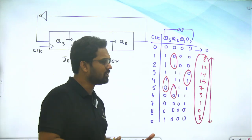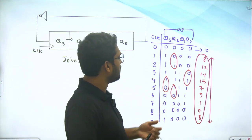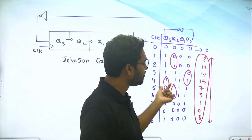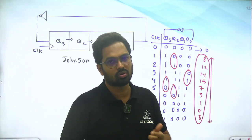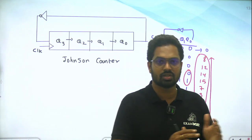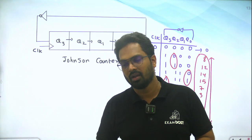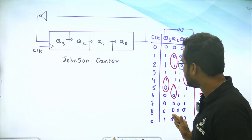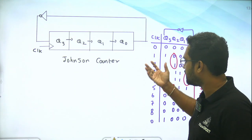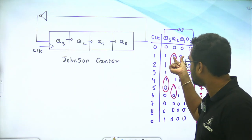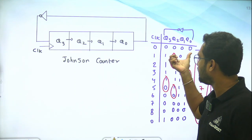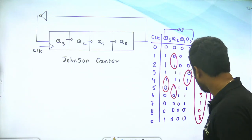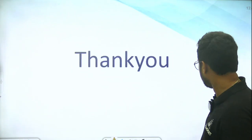If you read only 2 bits of the Johnson counter you can identify the state — to decode the Johnson counter, only 2 bits are sufficient. It can generate 8 different patterns. You can connect 8 devices to these patterns so that one pattern turns on one device — different applications can be served this way.